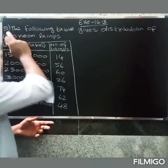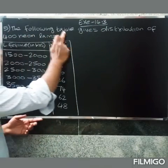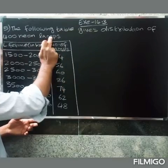So welcome friends, in our next session, we will ask the 5th question. The following table gives distribution of 400 neon lamps.